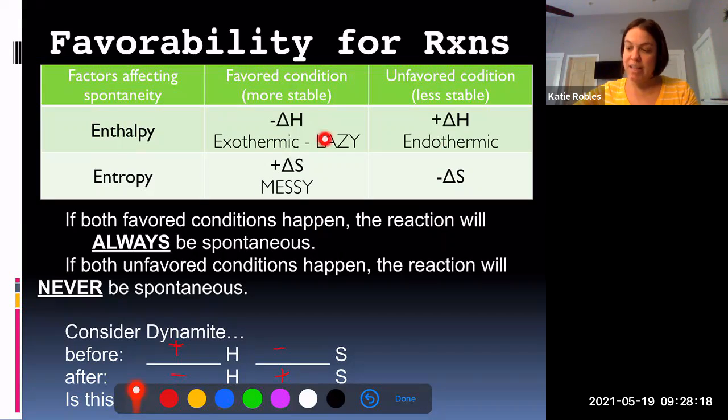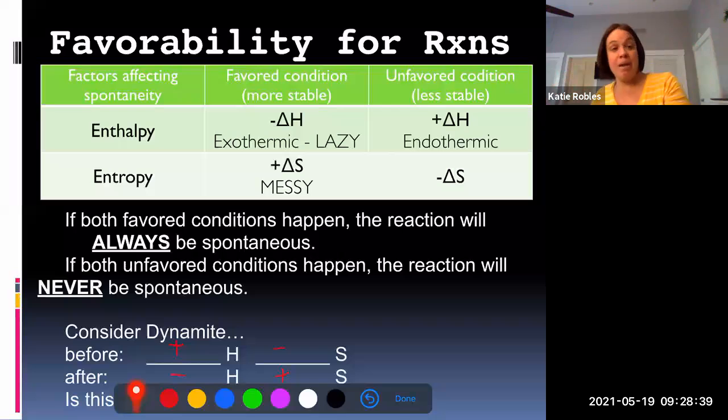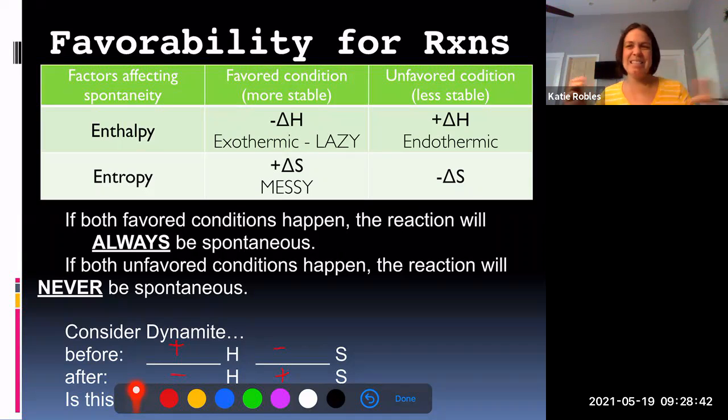The unfavored condition would be rolling uphill and becoming more neat. So if both conditions happen—if you are lazy and messy—the reaction will always be what we call spontaneous. And spontaneous reactions mean once we get them started they go. All right, so think about dynamite for a minute. Dynamite is nice and neat and orderly, and within even its chemical structure it's nice and neat and orderly. It has big molecules, and then after dynamite explodes it becomes all these gases and it explodes into lots of different things. Dynamite is a great example of a spontaneous reaction.